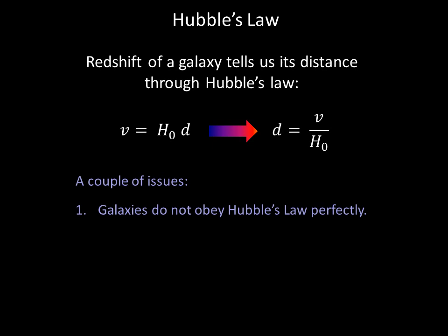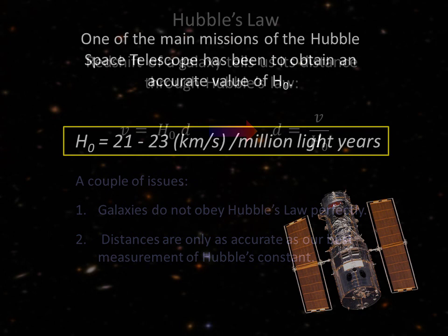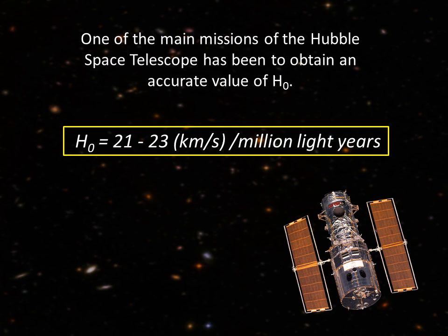There are a couple of issues, though. First, galaxies do not obey Hubble's Law perfectly — nearly all galaxies experience gravitational tugs from other galaxies, and those tugs will cause the speed to differ from what is predicted by Hubble's Law, making the distance calculation a bit off. Second, the distances calculated are only as accurate as our best measurement of the Hubble constant. One of the main missions of the Hubble Space Telescope has been to obtain an accurate value of H₀, using Cepheid variables in galaxies out to about 100 million light-years. Currently, the accepted value for the Hubble constant is between 21 and 23 kilometers per second per million light-years.